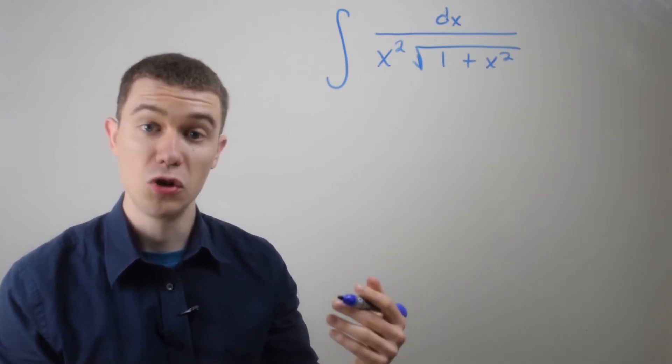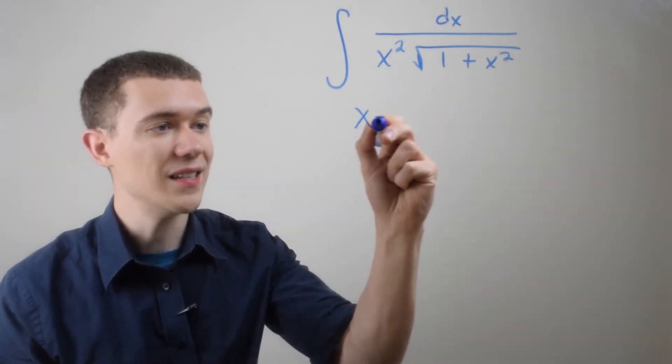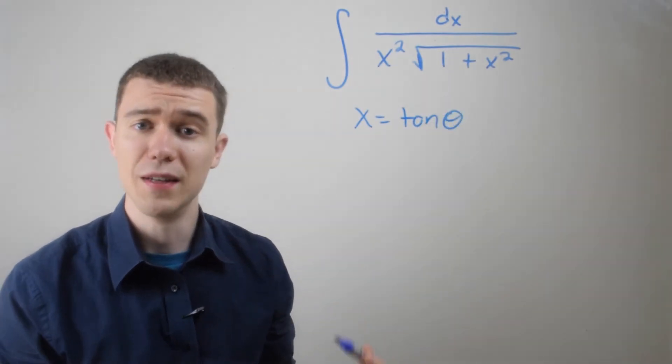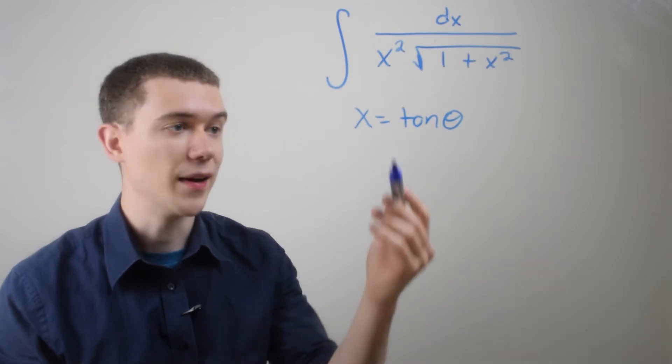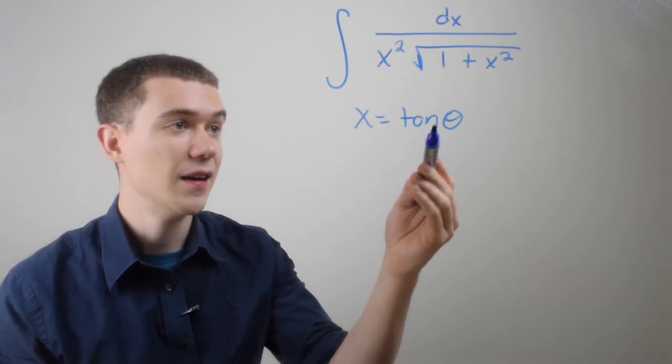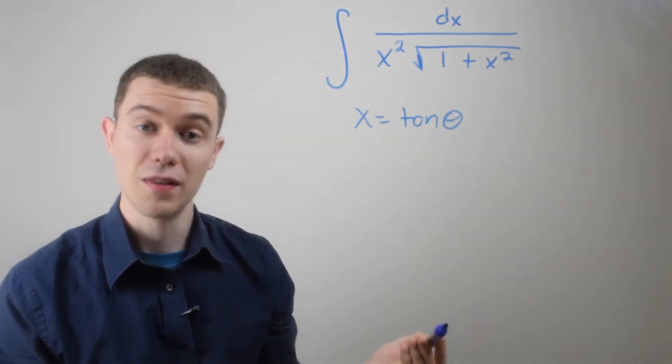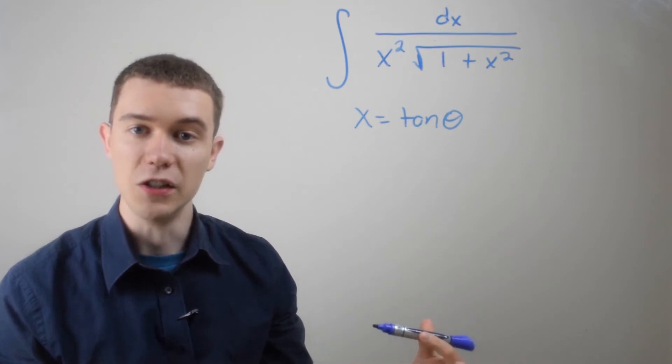So if I'm going to turn 1 plus x squared into 1 plus tangent squared theta, what kind of substitution am I going to have to do? Well, I'm going to have to do x equals to tan theta. It might be obvious, maybe it's not, it's okay. But you'll be able to see here in a second that when I let x be tan theta, under the square root is going to be 1 plus tangent squared theta, which is secant squared theta by that trig identity I just showed you.